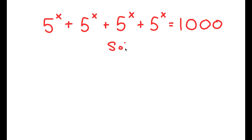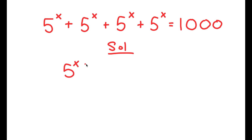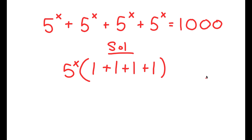For my solution, I'm going to first start by factoring out 5 to the power of x from my left-hand side, because as you can see, we have 4 of the same terms on my left-hand side, and the easiest way to go about solving this equation is to factor them out. So I get 5 to the power of x times 1 plus 1 plus 1 plus 1, which is equal to 1,000.